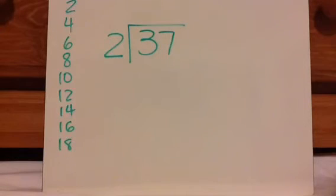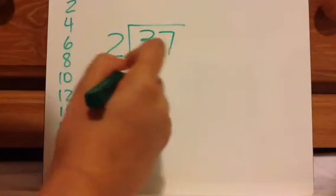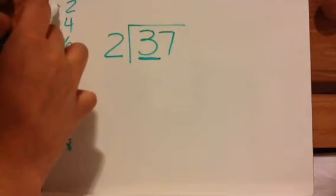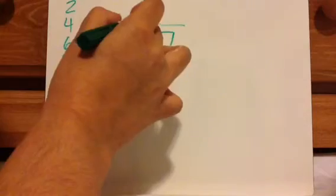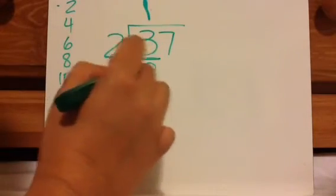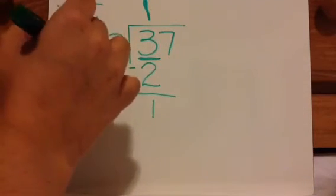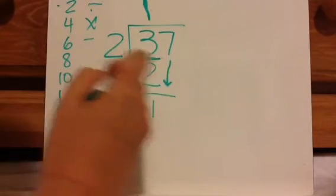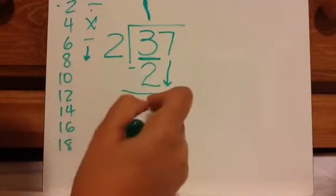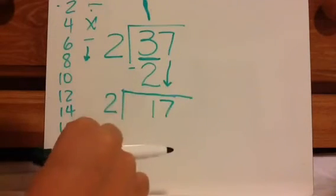Now you're going to go through the steps twice, so it's really important that you master the first few clips before you look at this. Now, you're not going to do 2 goes into 37. You're going to do 2 goes into 3. So 2 goes into 3 one time, because this is the closest to 3 without going over. So 2 times 1 is 2. 3 minus 2 is 1. Now there's a step called bring down — you bring down the 7.